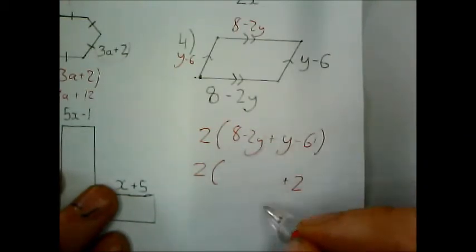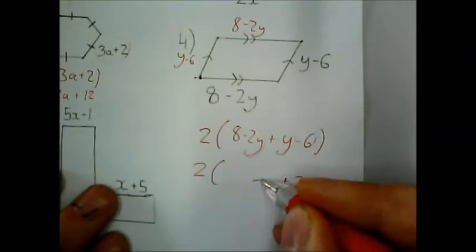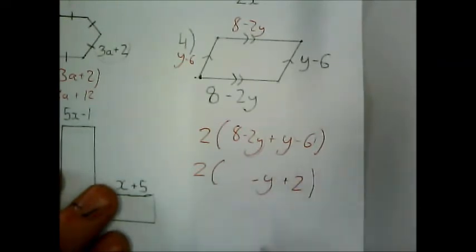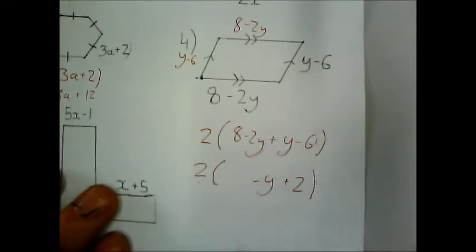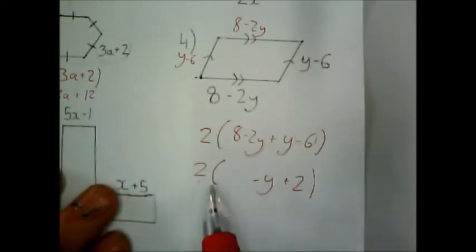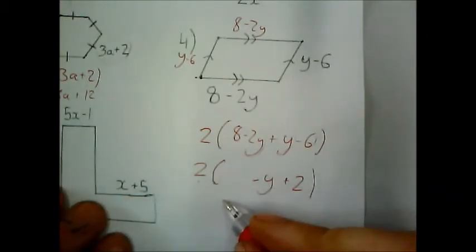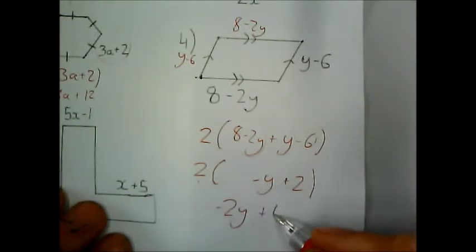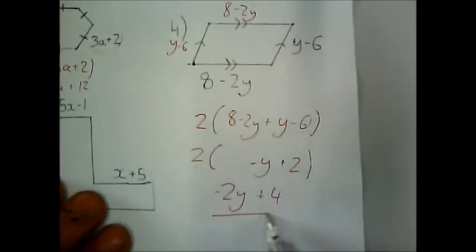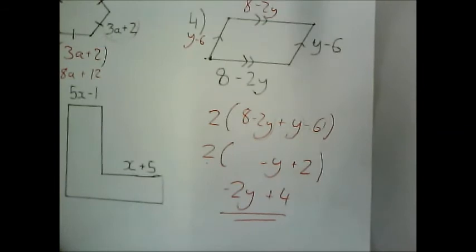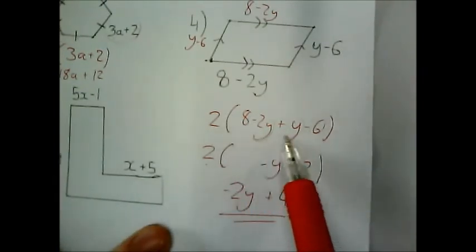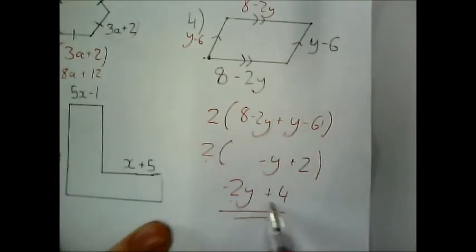And a negative 2y. And a positive y. Is going to give me negative y. So I've got 2 lots of negative y plus 2. Or 2 take away y. Whichever you want. So then if you wanted to you can expand out the bracket. To give 2 lots of negative y. Negative 2y. Plus 2 lots of 2. 4. OK. See how the rather complicated looking bracket turns into something quite simple.